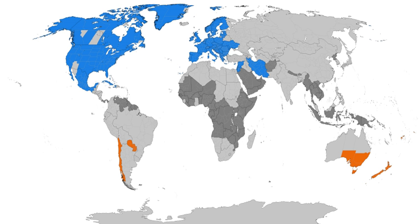From the 14th century onwards, equal-length civil hours supplanted unequal ones, so civil time no longer varies by season. Unequal hours are still used in a few traditional settings, such as some monasteries of Mount Athos and all Jewish ceremonies.